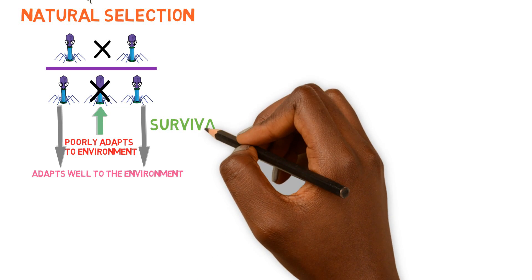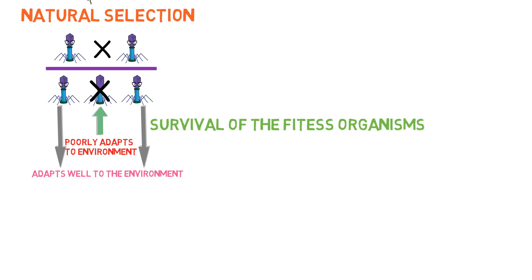Offspring with unfavorable features will be least likely to survive and reproduce, especially when competing against offspring with favorable characteristics. This is survival of the fittest, especially important when competing for limited resources. This is just a quick overview of natural selection, touching on the surface of it.